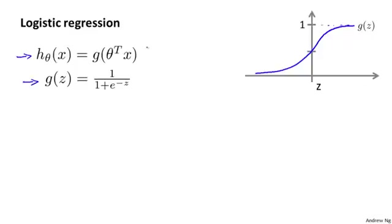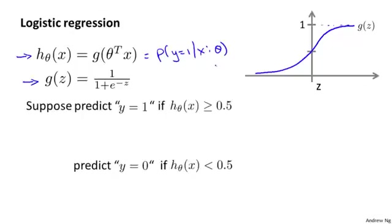Concretely, this hypothesis is outputting estimates of the probability that y is equal to 1, given x and parameterized by theta. So if we wanted to predict whether y equals 1 or y equals 0, here's something we might do: whenever the hypothesis outputs that the probability of y being 1 is greater than or equal to 0.5 — meaning it's more likely to be y equals 1 than y equals 0 — then let's predict y equals 1. And otherwise, if the estimated probability of y being equal to 1 is less than 0.5, then let's predict y equals 0.